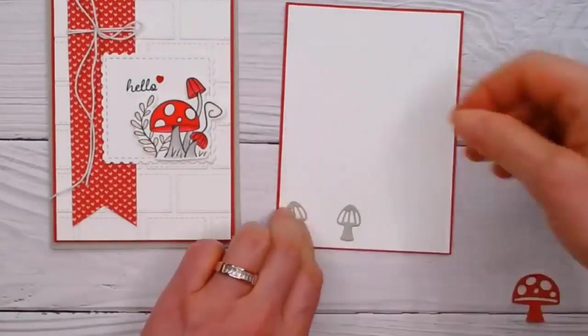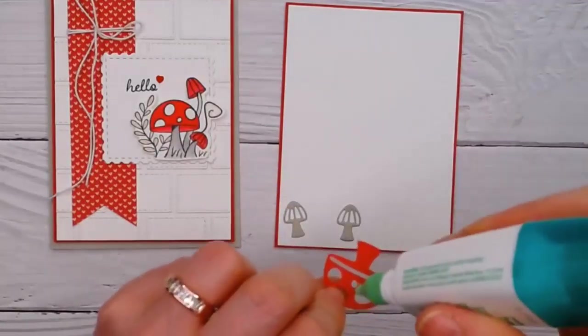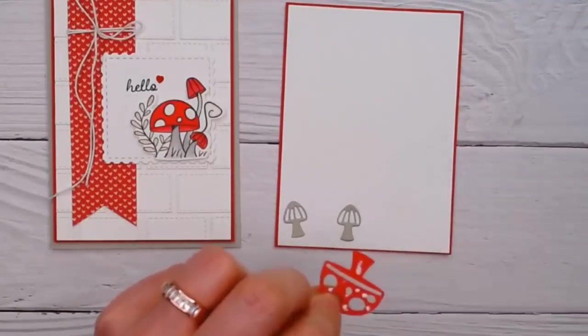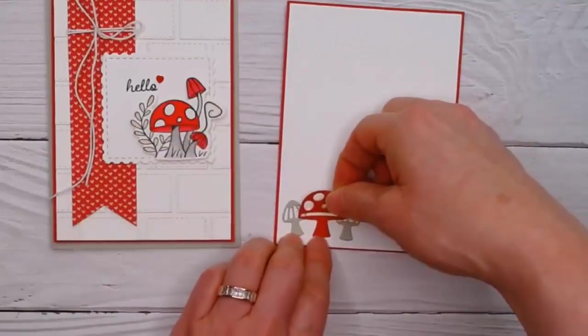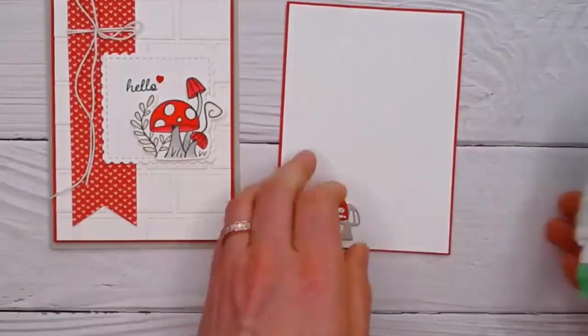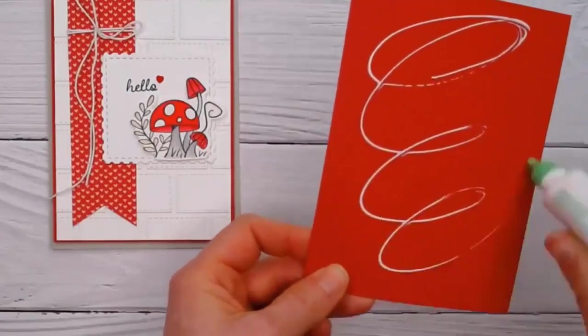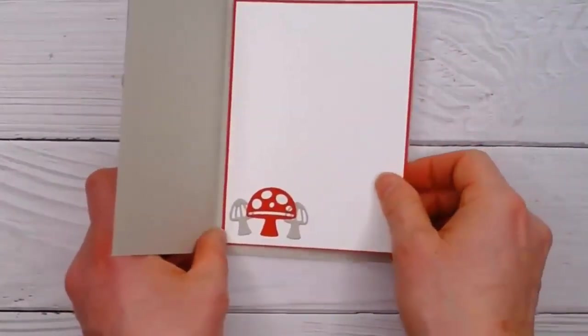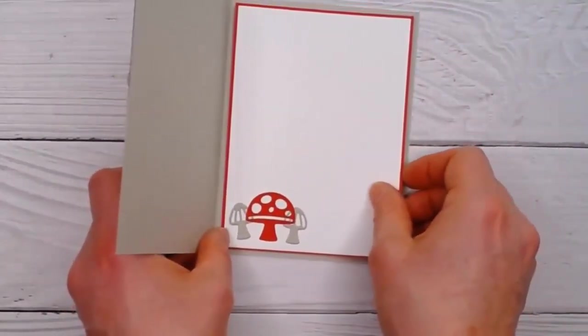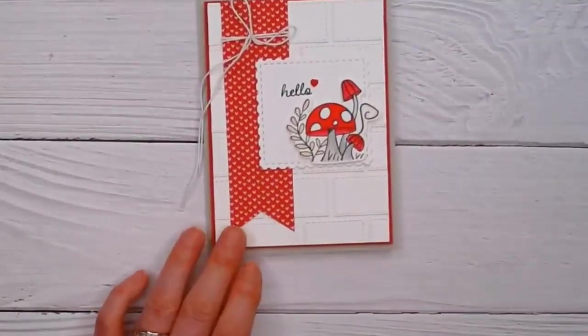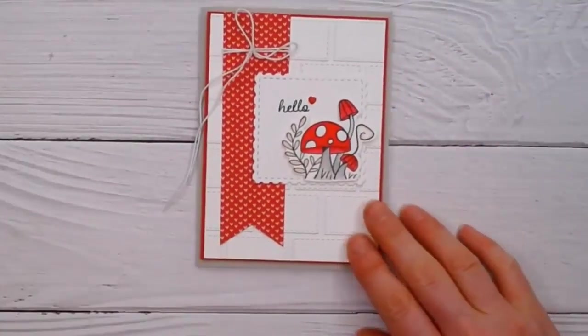This time I'm going to use the die cuts, the little toadstool die cuts. You could stamp some more inside if you wanted to, but I wanted to show you how cute these were as well. So I've just done those in the same Sahara sand and real red. So this bundle is more than just snails, although I like the snails too. But it's also the toadstools and a lot of postage stamp and mail sort of images which are quite cute. I've got some more samples to show you because I want you to see that really cute envelope as well. And then I think our card is done, so that one was really quick and easy.